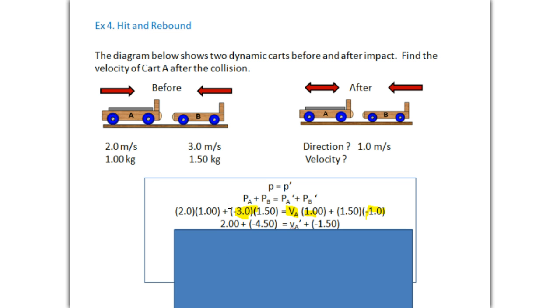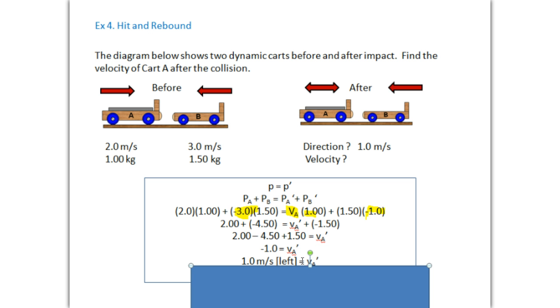Carry your multiplication. Two times one. Negative three times 1.5. One times the velocity of A, it's just the velocity of A prime. And negative one times 1.5. Here we'll bring the 1.5 over. Negative becomes positive. And again, it's straight algebra. This shouldn't be anything new for you folks in terms of math skills. So carry your addition and subtraction. And your velocity works out to negative one. Which means one meter per second to the left.